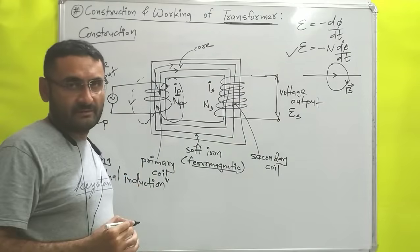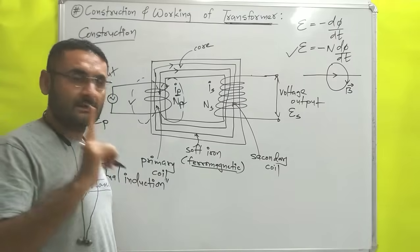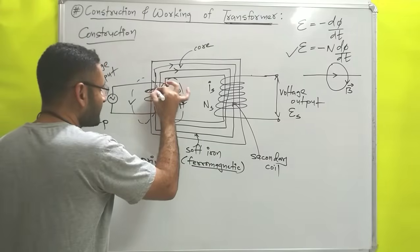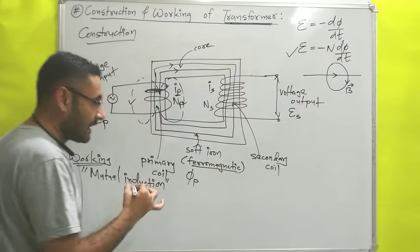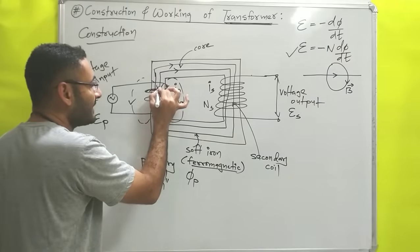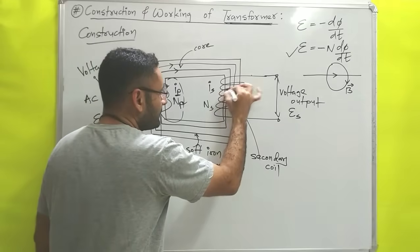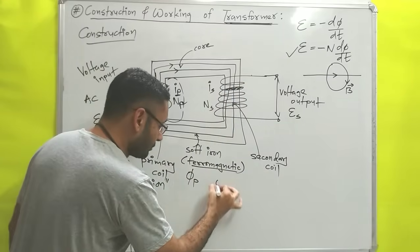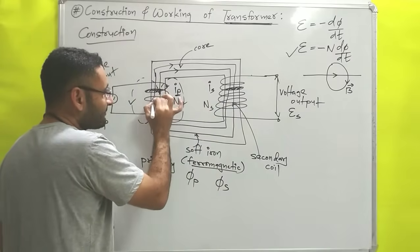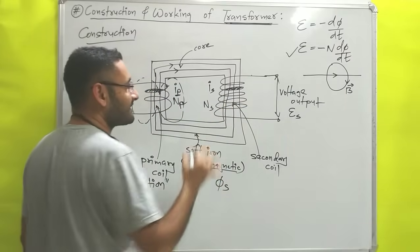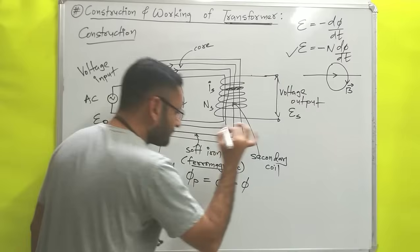The flux through a single turn of the primary coil is ΦP. If, suppose, two magnetic field lines are passing, then flux is 2. The flux through a single turn of the secondary coil ΦS will also be 2, because the same two magnetic field lines pass through the secondary coil as well. So ΦP equals ΦS, which we can write as Φ.